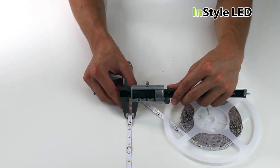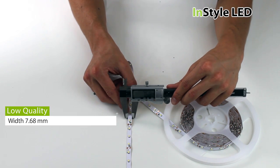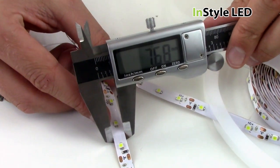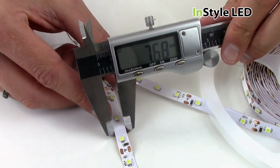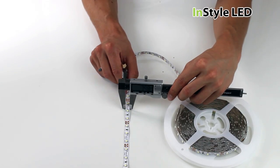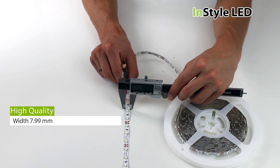The low quality LED strip uses a 7.68mm wide PCB. The high quality LED strip uses a 7.99mm wide PCB.